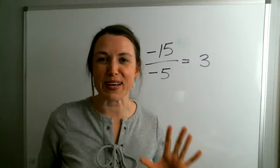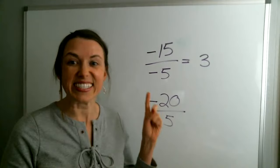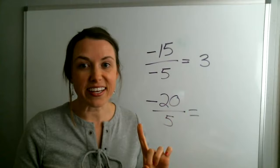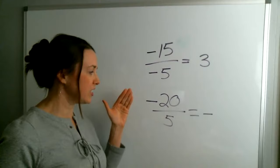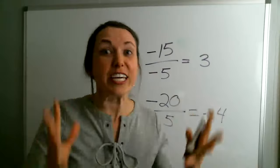Let's do another one: negative 20 divided by 5. Type the answer in the chat. Now one is a negative and one is a positive. When one is negative, I know the answer is going to be negative. So negative 20 divided by 5 is going to be negative 4. If you're typing in the answers, it's going to be connecting in your head just a little bit more.